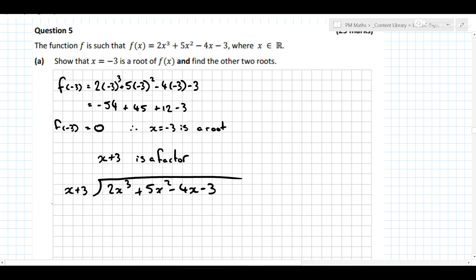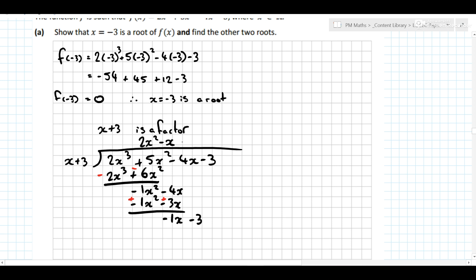So asking ourselves, x multiplied by what is 2x cubed? Well that's 2x squared. So 2x squared by x is 2x cubed, 2x squared by 3 is 6x squared. Change both sides, we have minus 1x squared. Bring down minus 4x. x by what is minus 1x squared? Minus x. Minus x by x, minus 1x squared, minus x by 3, minus 3x. Change both sides again, minus 1x. Bring down minus 3. x by what is minus 1x? This is minus 1. Minus 1 by x is minus 1x, minus 1 by 3, minus 3. Change the signs, plus plus, zero.